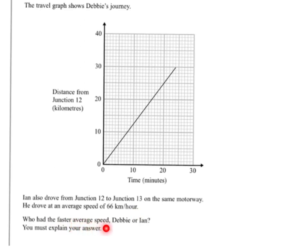So the question is, who had the faster average speed, Debbie or Ian? We must explain our answer. We need to use the distance-time graph to work out Debbie's speed. What we can see is that in 20 minutes, Debbie has gone 25 kilometres.